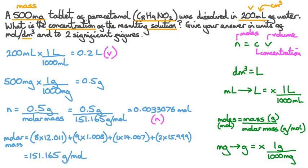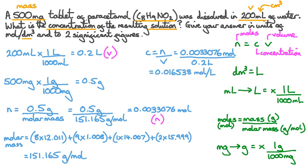Now that we have both N and V, we can use N equals CV to find the concentration. Rearranging in terms of C gives us C equals N divided by V. Inputting our values: concentration equals 0.0033076 moles divided by 0.2 litres, which works out at 0.016538 moles per litre. Rounding to two significant figures gives us 0.017, and since litres are the same as decimetres cubed, we can write the units as moles per decimetre cubed. This is our final answer.